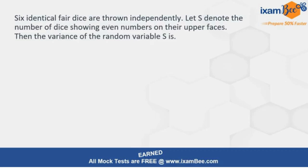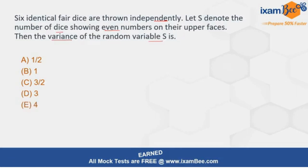The question on your screen is: six identical fair dice are thrown independently. Let S denote the number of dice showing even numbers on their upper faces. Then the variance of the random variable S is what? The options given are: half, one, three by two, three, and four.